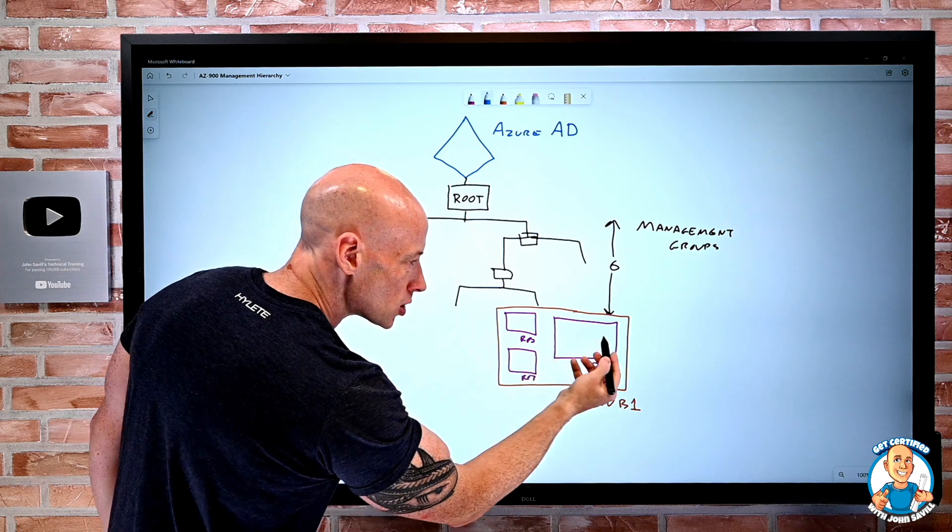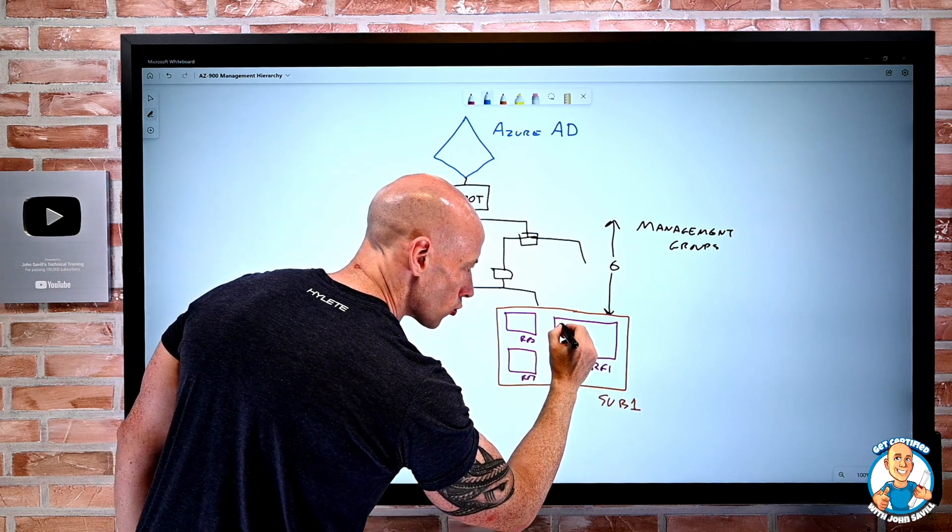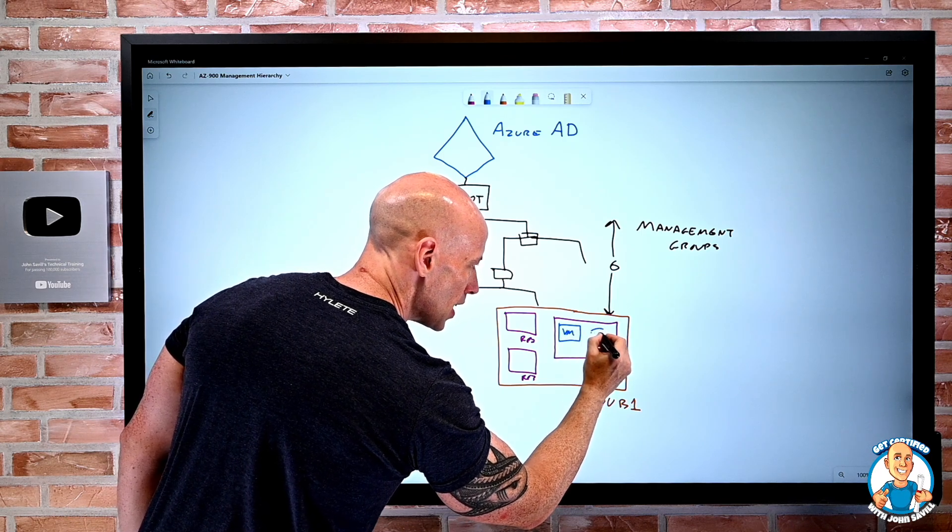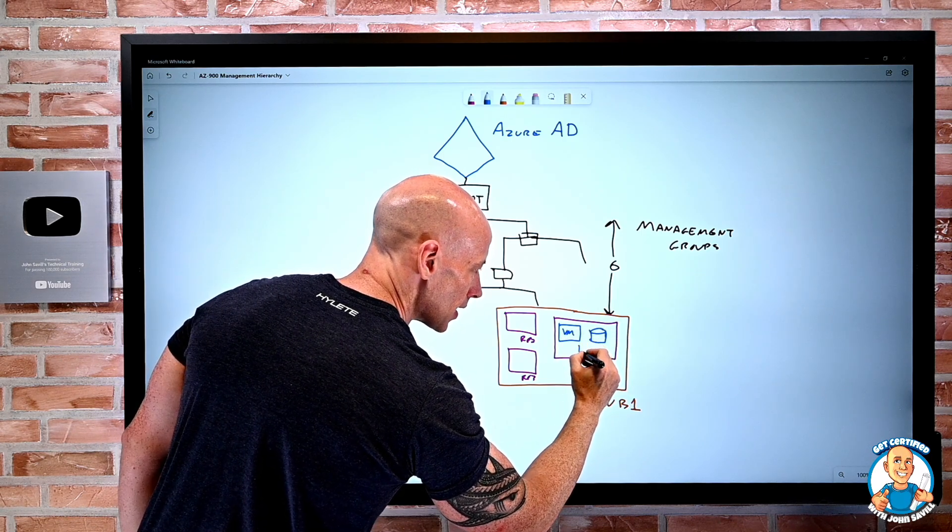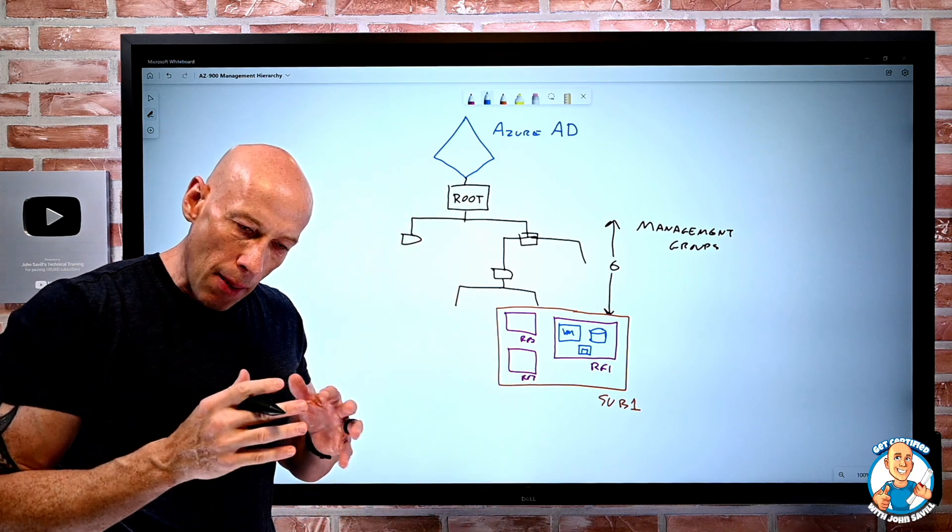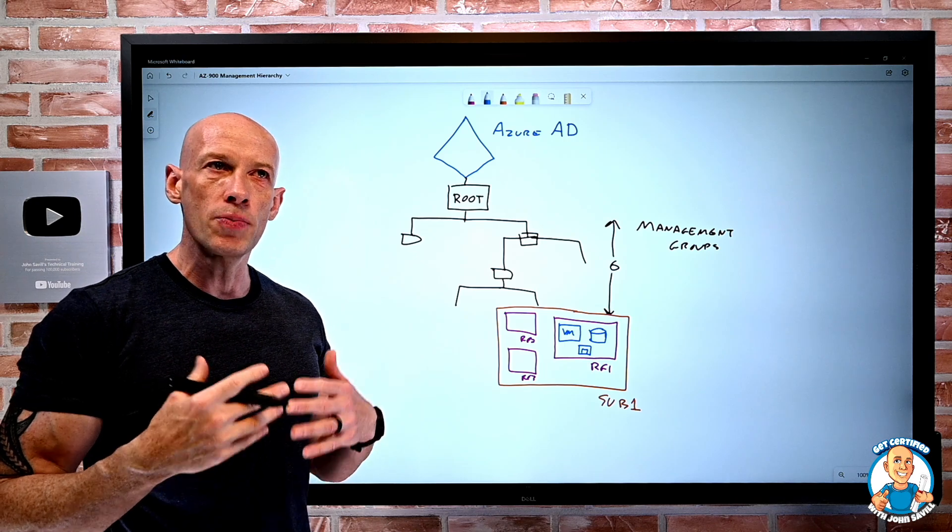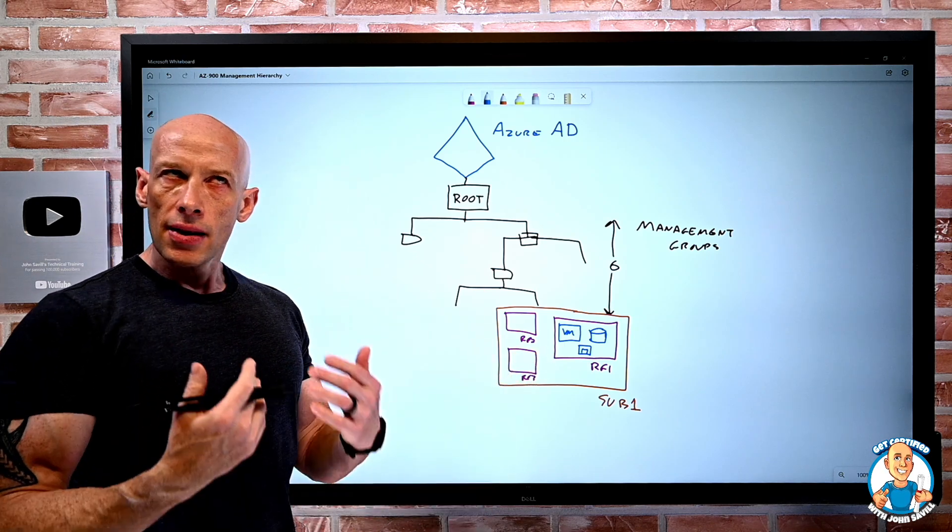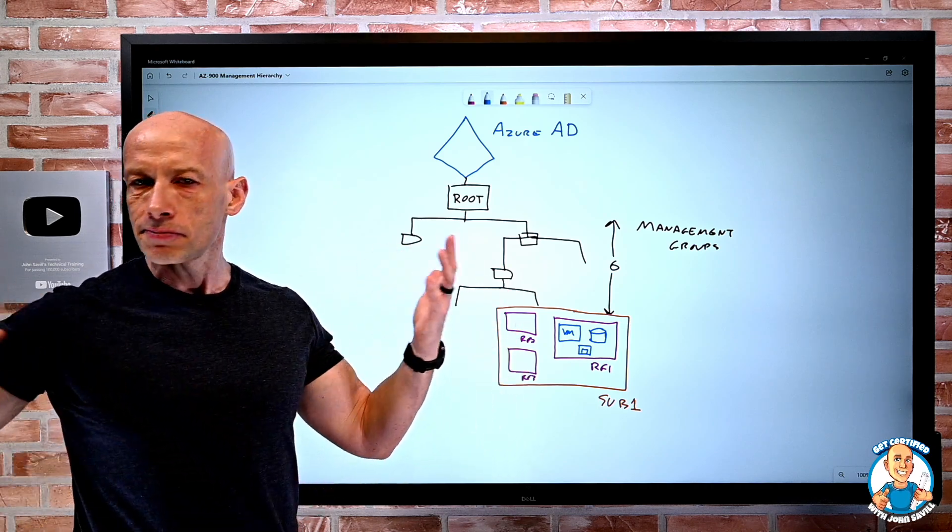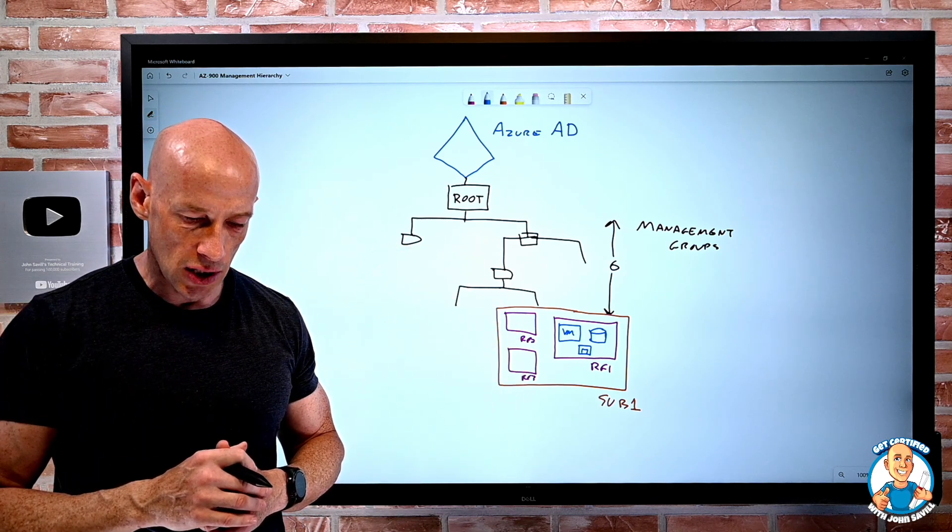And then obviously our resources go into a resource group. This could be multiple virtual machines, storage accounts, disks, whatever I need those to be. And remember, we think about putting things in the same resource group that share a common life cycle. They're part of the same service. They're going to get created together, run together, ultimately get decommissioned together.